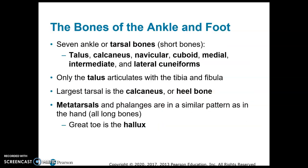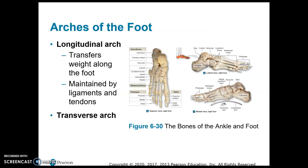The ankle bones are called the tarsal bones, and they consist of short bones: the talus, calcaneus, navicular, cuboid, medial, intermediate, and lateral cuneiforms. The heel bone is the calcaneus. It's probably easier to see in the side view.